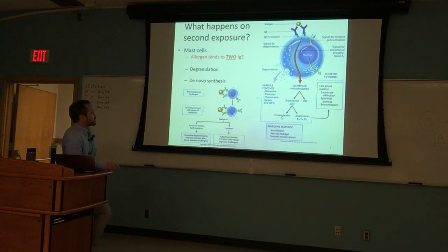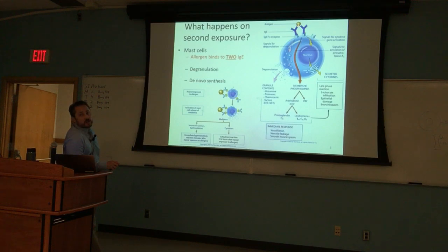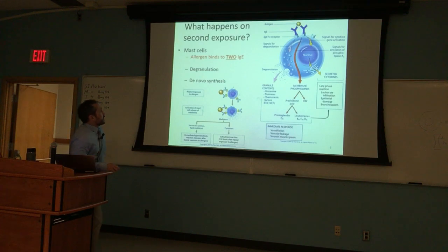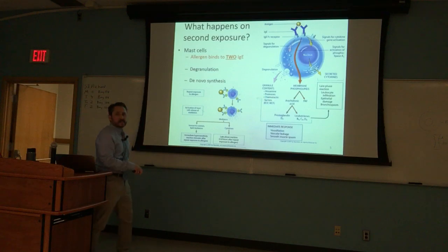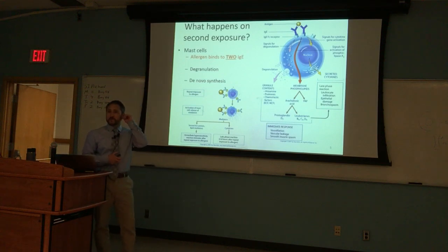On the second exposure the IgE is already ready, bound to the mast cell. Two IgEs bind one single antigen, and the response is much faster and much more aggressive. You get degranulation that dumps primarily histamine, but also proteases and chemotactic factors. Those chemotactic factors recruit macrophages — circulating monocytes — out of the bloodstream to phagocytose the allergen.